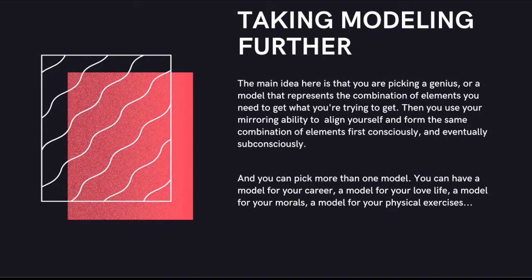But let's take it a step further. The main idea here is that you're picking a genius or a model that represents the combination of elements you need to get what you're trying to get eventually. Then you use your mirroring ability to align yourself and form the same combination of elements, first consciously and eventually subconsciously. And here is the part where you can take it a step further.